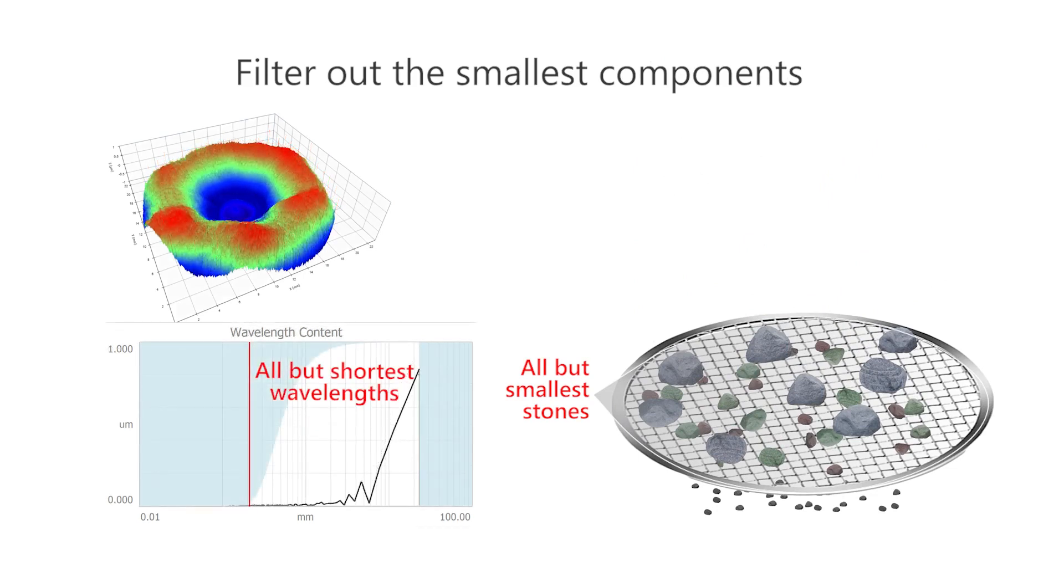For surface texture, that means filtering out the shortest wavelengths, which may be measurement noise or just small structures that don't impact our application. We call this the short filter, or S filter, or Lambda S.